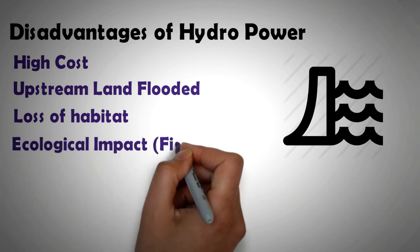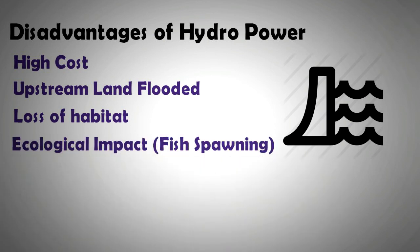There are many fish species that spawn upstream of the river. The building of a dam blocks their migration path. Although by providing a fish ladder, this problem can be alleviated to a large extent. Similarly, there are many freshwater fish species that cannot migrate downstream because of the barrier.